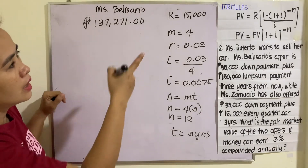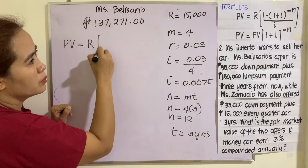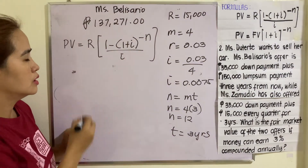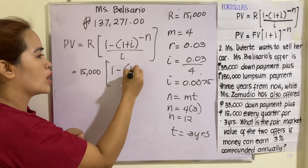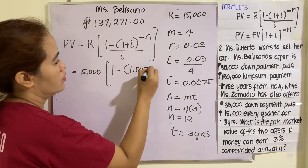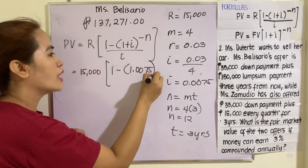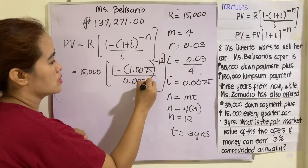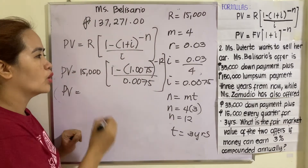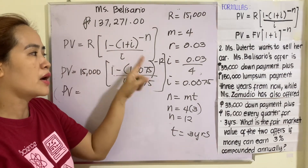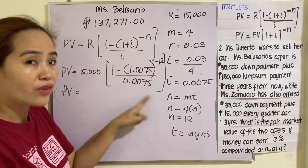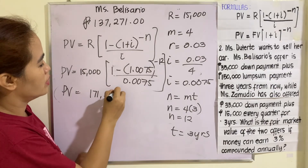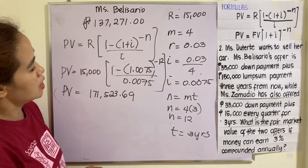Using the first formula: PV equals R multiplied by [1 minus (1 plus i) raised to negative n] divided by i. So PV equals 15,000 times [1 minus (1.0075) raised to negative 12] divided by 0.0075. Press: 1 minus 1.0075 raised to negative 12, equals, divided by 0.0075, times 15,000. You get 171,523.69.